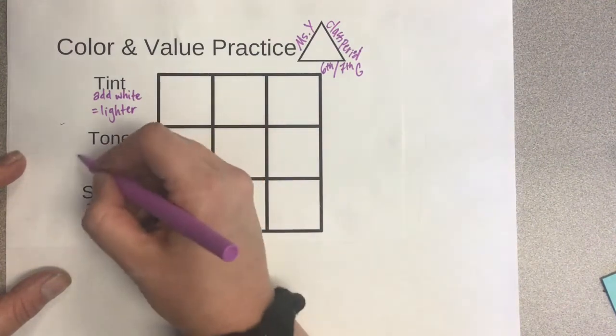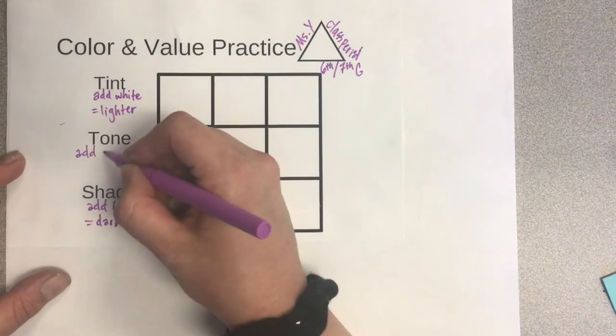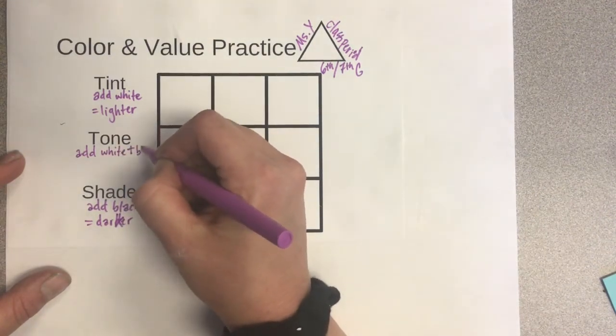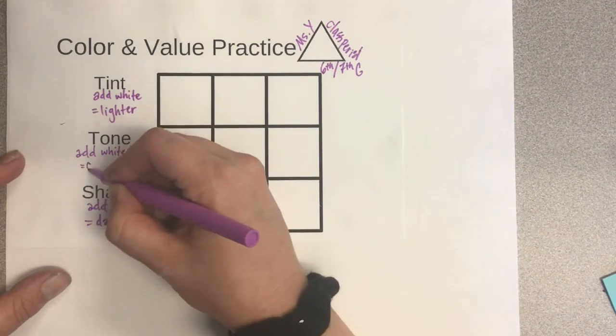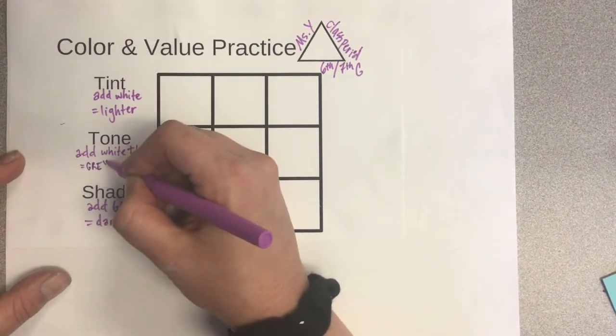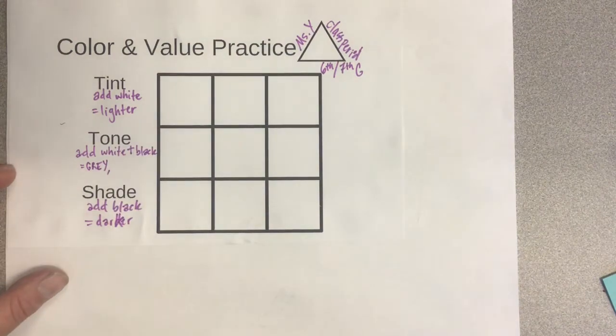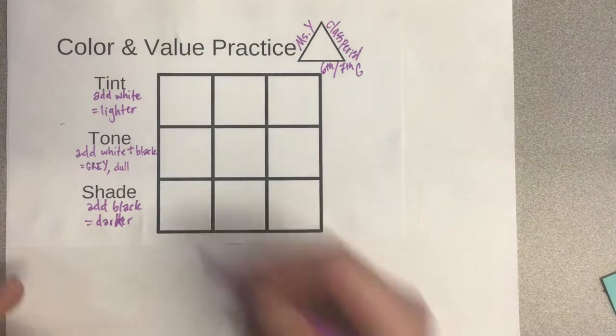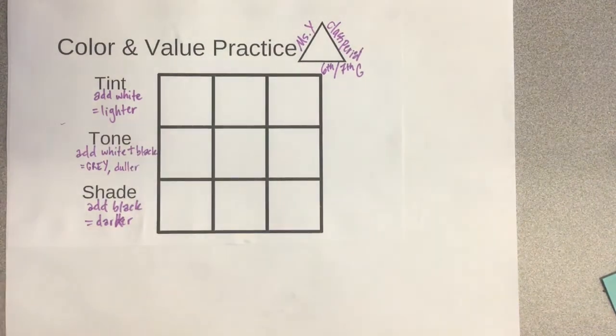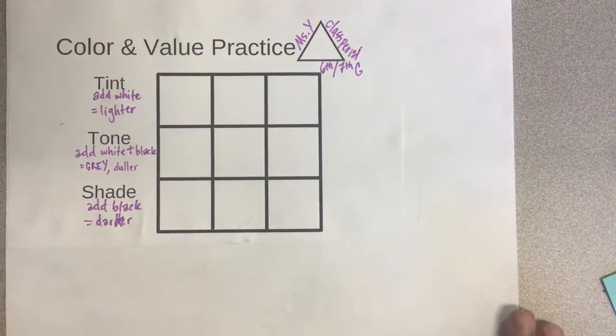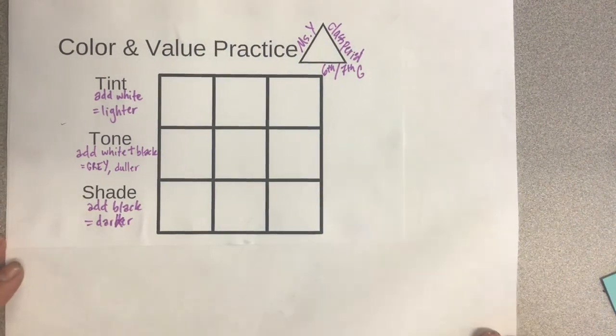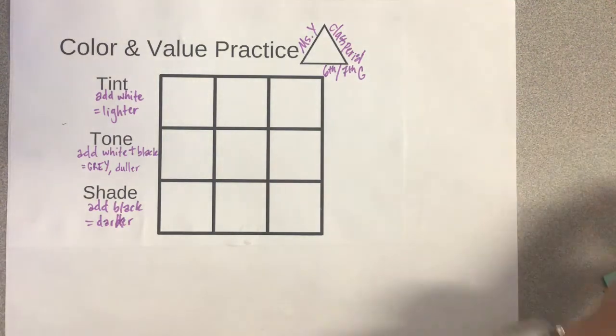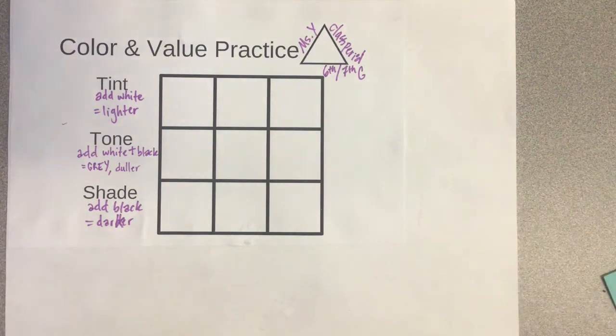And a tone is when you add gray, which is white plus black and you will end up getting gray. This should dull or darken your color, but we'll see what happens. It really just depends on the ratio, the amount of white versus black, because it could dull it but it could make it lighter or darker depending on what you have more of, either white or black.